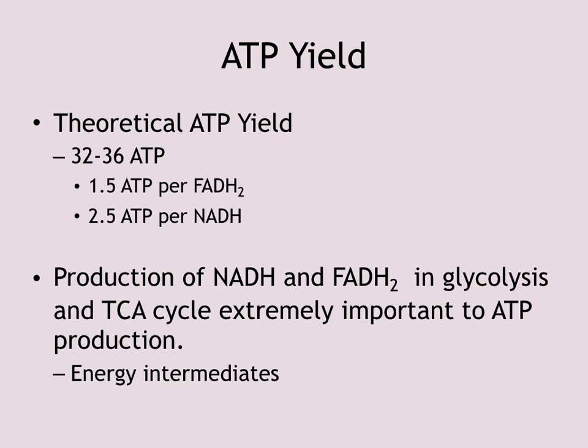Theoretically, aerobic glucose metabolism yields 32 to 36 ATP per glucose molecule — the same for eukaryotes and most prokaryotes, though bacteria may produce slightly less if using protons for active transport or flagella. The primary function of glycolysis, the Krebs cycle, and the transition step is oxidation of glucose and production of energy intermediates — NADH and FADH2.